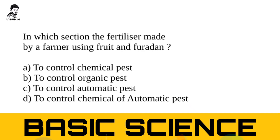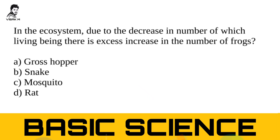Next question: in which section is the fertilizer made by a farmer using fruit and furidon classified? Keep that in mind — fruit and furidon. Option A: to control chemical pest. Option B: to control organic pest. Option C: to control automatic pest. Option D: to control chemical of automatic pest. The correct answer is option B — to control organic pest. Fruit and furidon is used to control organic pest.